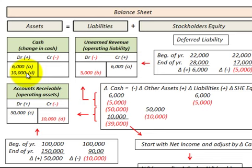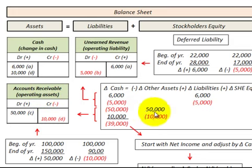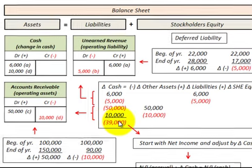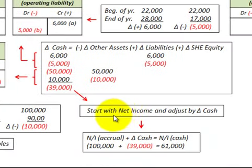Going over to our accounting equation, remember this arithmetic change: we're subtracting any change in other assets, and the other assets here would be accounts receivable. So a $50,000 plus amount in accounts receivable translates over to a minus $50,000. And a minus $10,000 in other assets translates over to a plus $10,000. We total our change in cash for the change in liabilities plus the change in other assets, and whatever that total is, we adjust our net income by that amount.